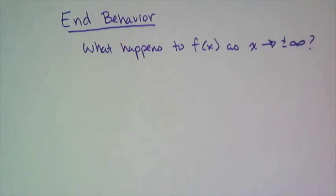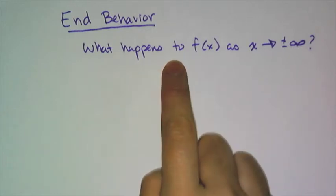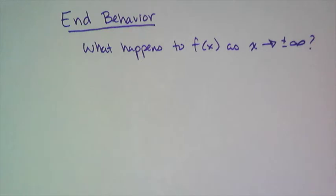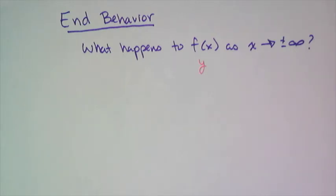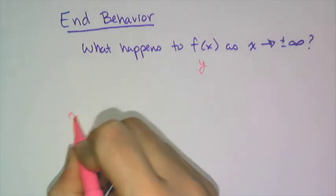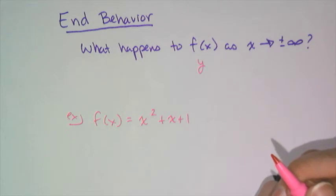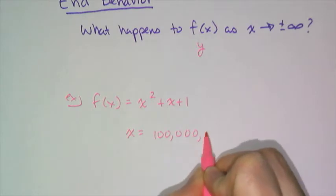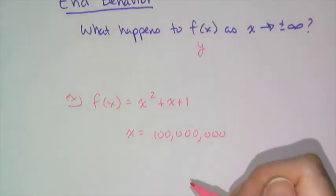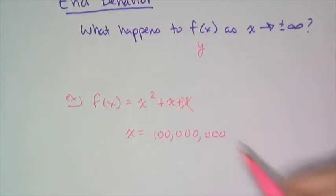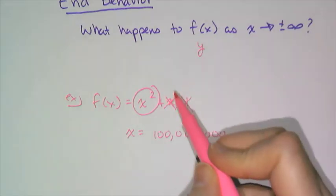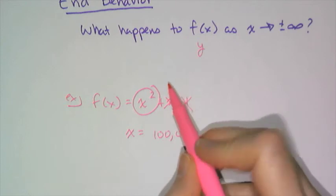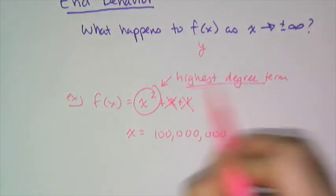When you're asked to analyze the end behavior of a function — whether it's a polynomial, exponential, or whatever — you basically have to answer the same question every time: what happens to f of x as x approaches positive infinity or negative infinity? It's very predictable for a polynomial. So what happens as x gets super, super huge? If I think about x equals 100 million, it's the x squared term — the highest degree term — that's going to have the biggest impact on the y value. When analyzing a polynomial for end behavior, all you care about is the highest degree term.